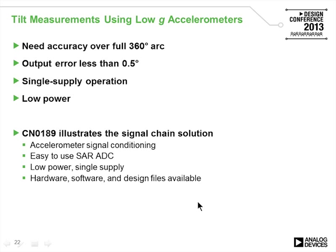Reference design circuit note CN189 shows a complete single signal-chain solution for a dual-axis tilt measuring system. The dual-axis approach is necessary for full 360-degree capability with consistent sensitivity across the entire range.